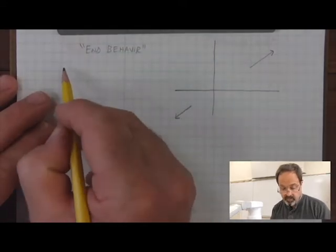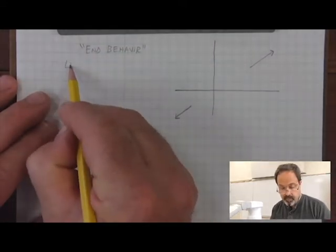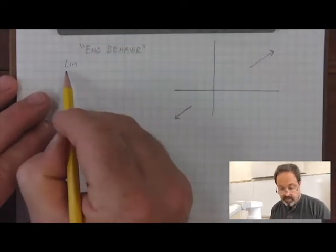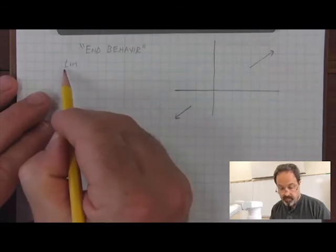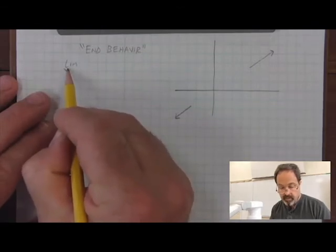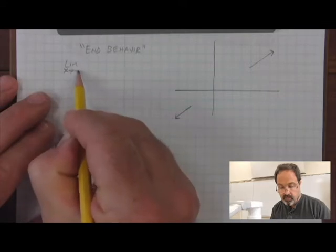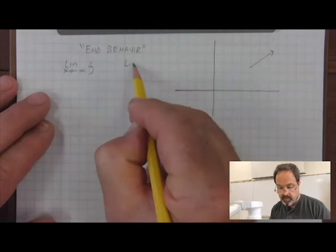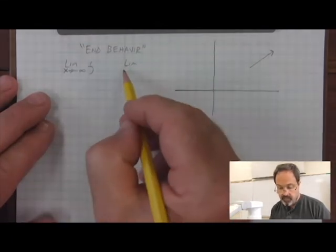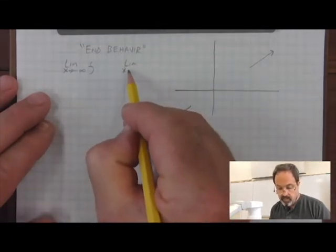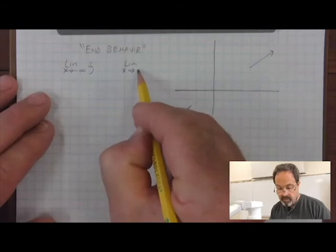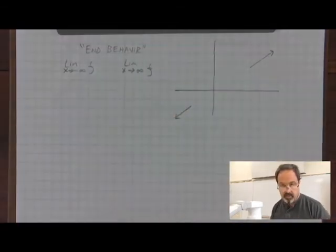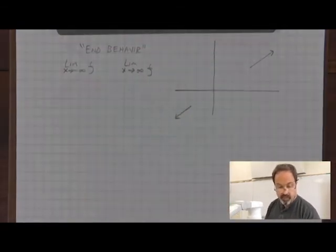So end behavior is investigated formally by the limits, the two infinite limits, the limit of the function as it goes to negative infinity, with the notation to remind you how to write that limit question down, and the limit as x goes to positive infinity.